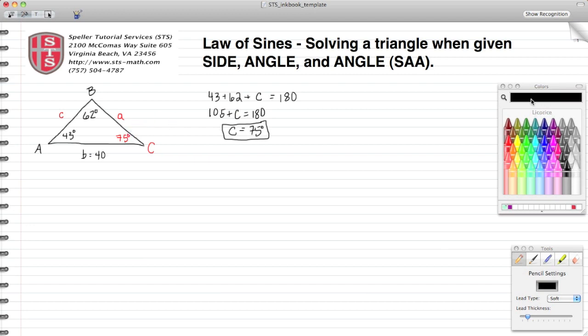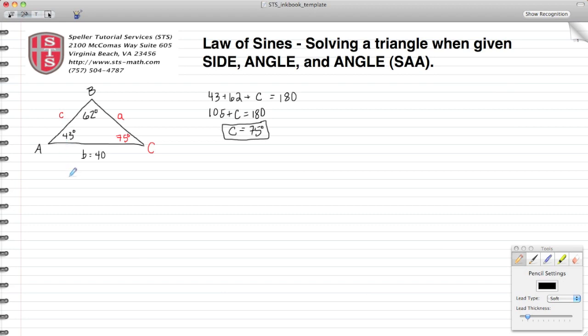Now we're going to talk about the Law of Sines. The Law of Sines says if you take a side and divide that by the sine of the angle opposite of it, that relationship remains true for the entire triangle.